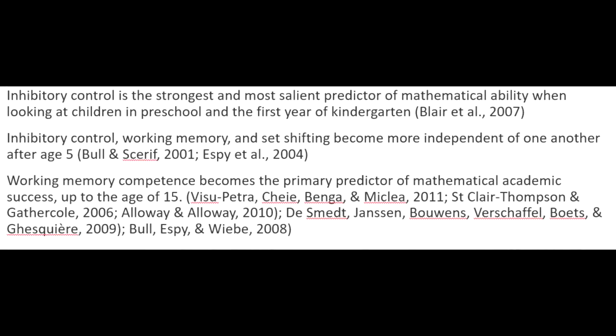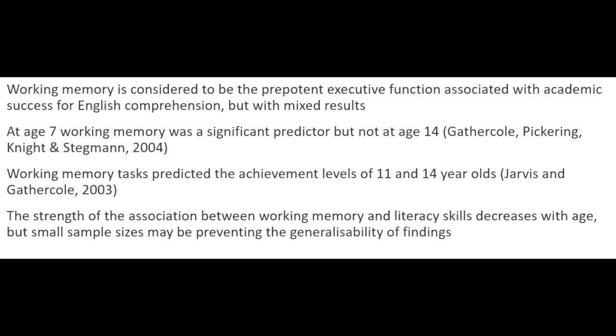When looking at specifics, research would seem to indicate that for mathematical ability, inhibitory control is the strongest and most salient predictor in children in preschool and the first year of kindergarten. As little as one year later, however, it appears that working memory takes a stronger role, and the constructs of inhibitory control, working memory and set shifting become more independent of one another. Working memory is consistently a strong predictor of mathematical success, even up to the age of 15 and beyond. When considering literacy, working memory is also considered to be the prepotent executive function associated with academic success for English comprehension, although the results are mixed.